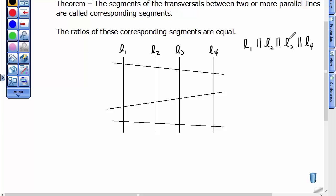The segments of the transversal between two or more parallel lines. So let's use these two. Segment A and segment C are segments on a transversal between three parallel lines. They would correspond with what I'm going to call B and D.